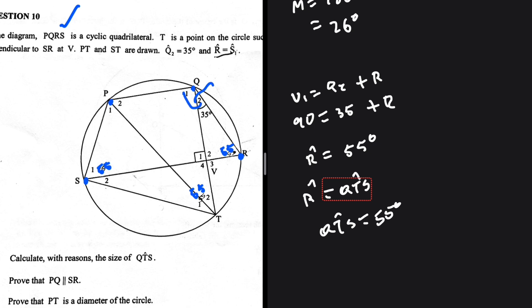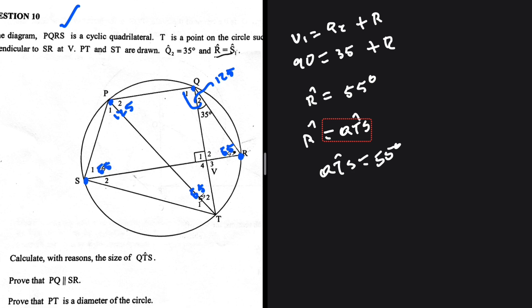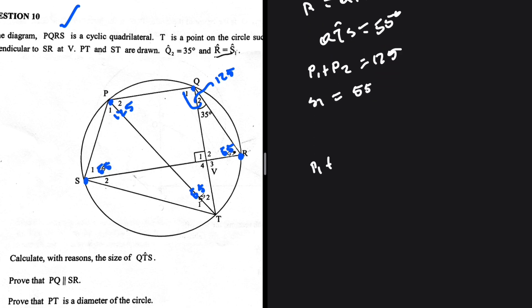Since angle R is 55, P1 plus P2 should also equal 125, because opposite angles of a cyclic quadrilateral are supplementary. So P1 plus P2 equals 125, and S1 equals 55. When we add P1 plus P2 plus S2, we get 180 degrees — these are co-interior angles — therefore PQ is parallel to SR.